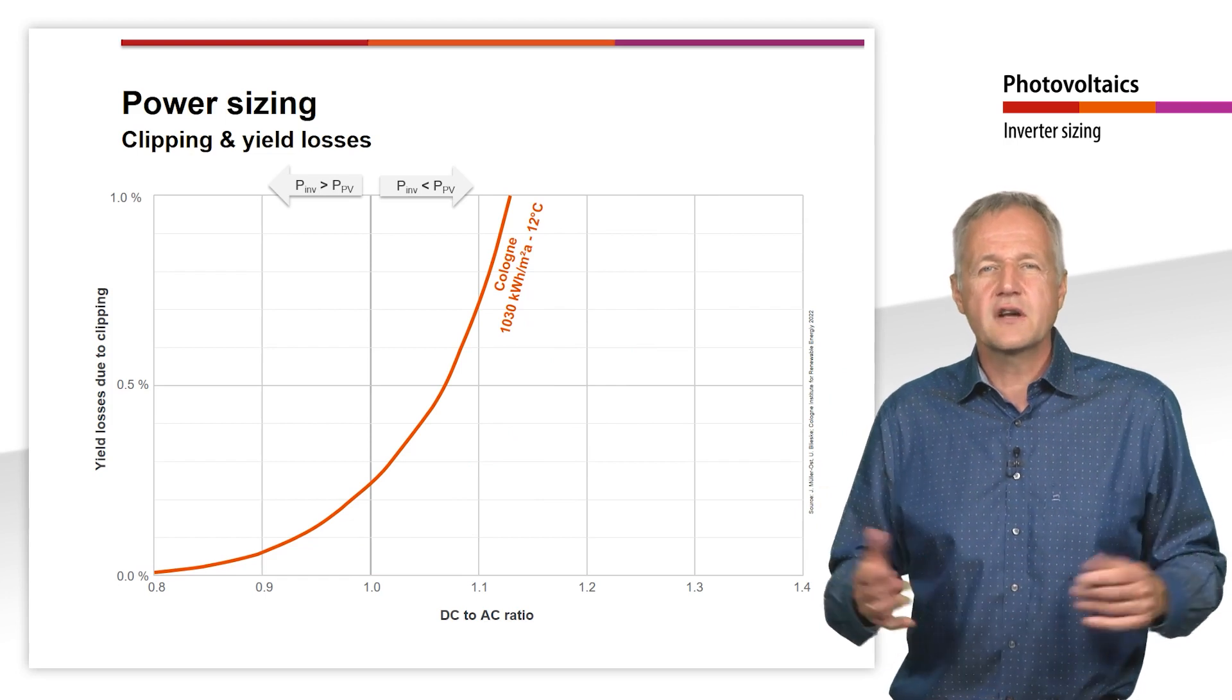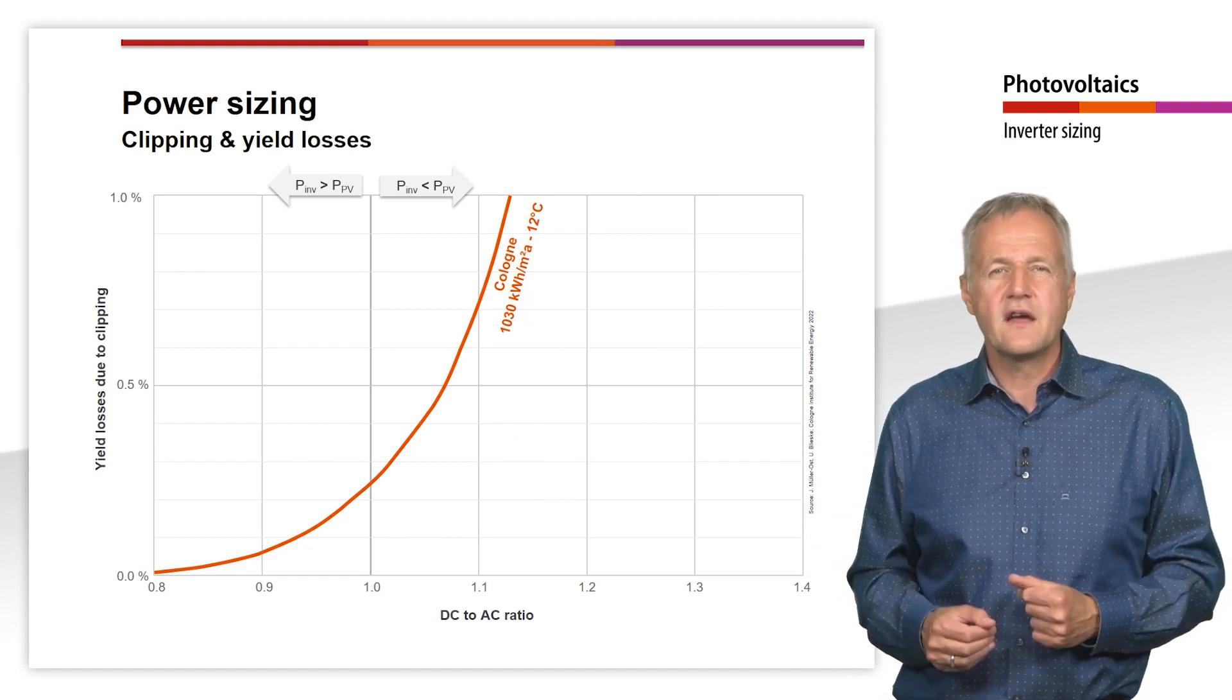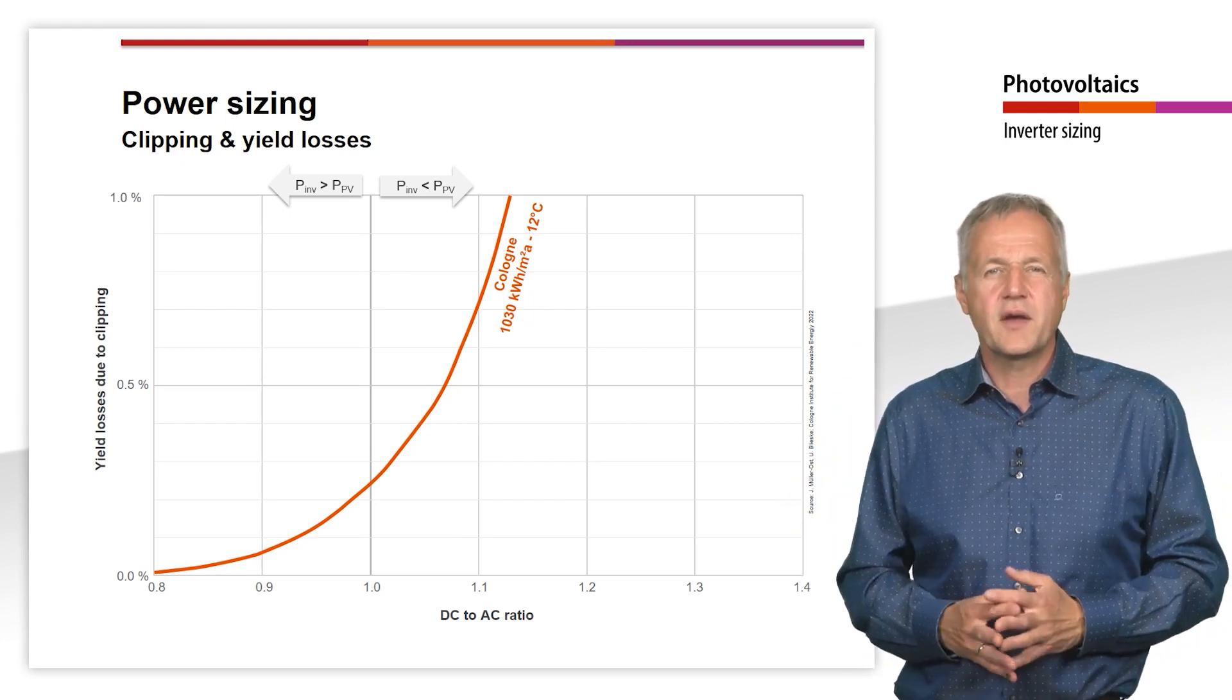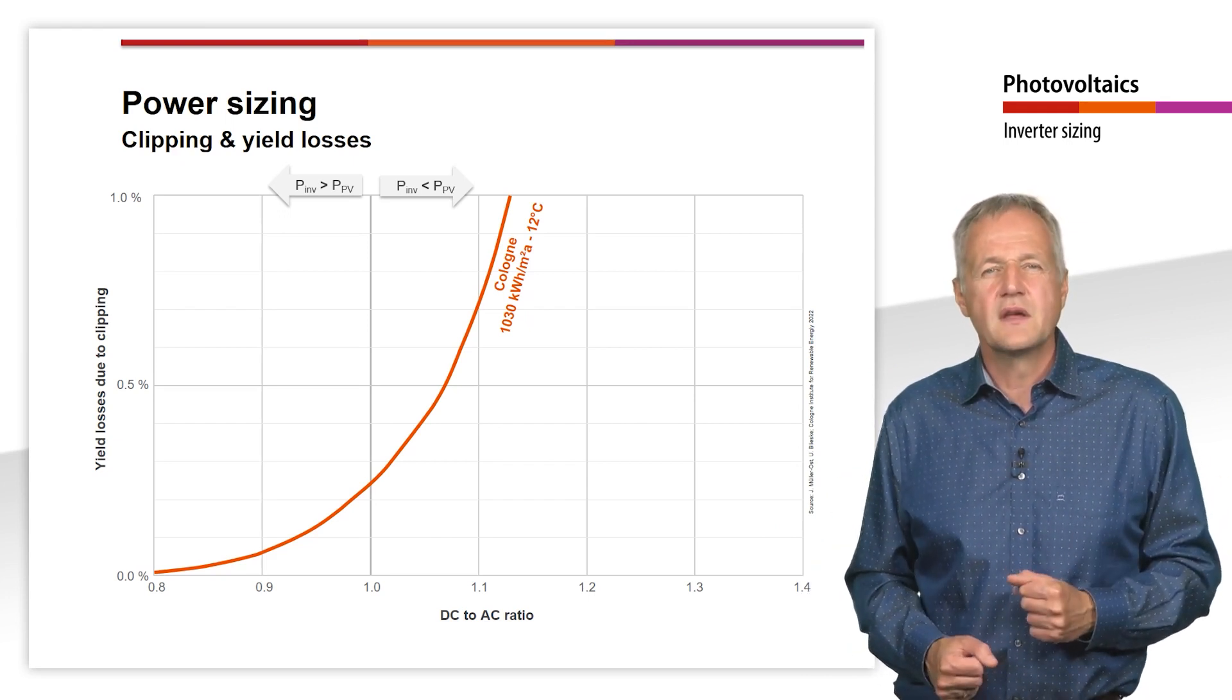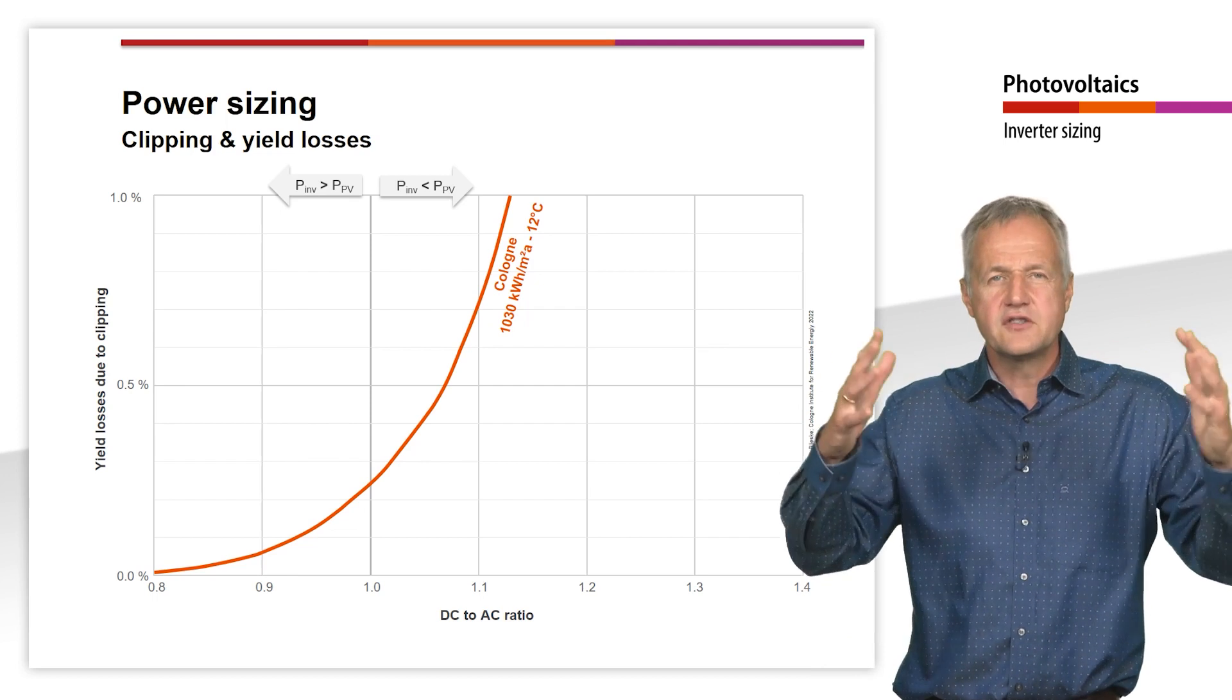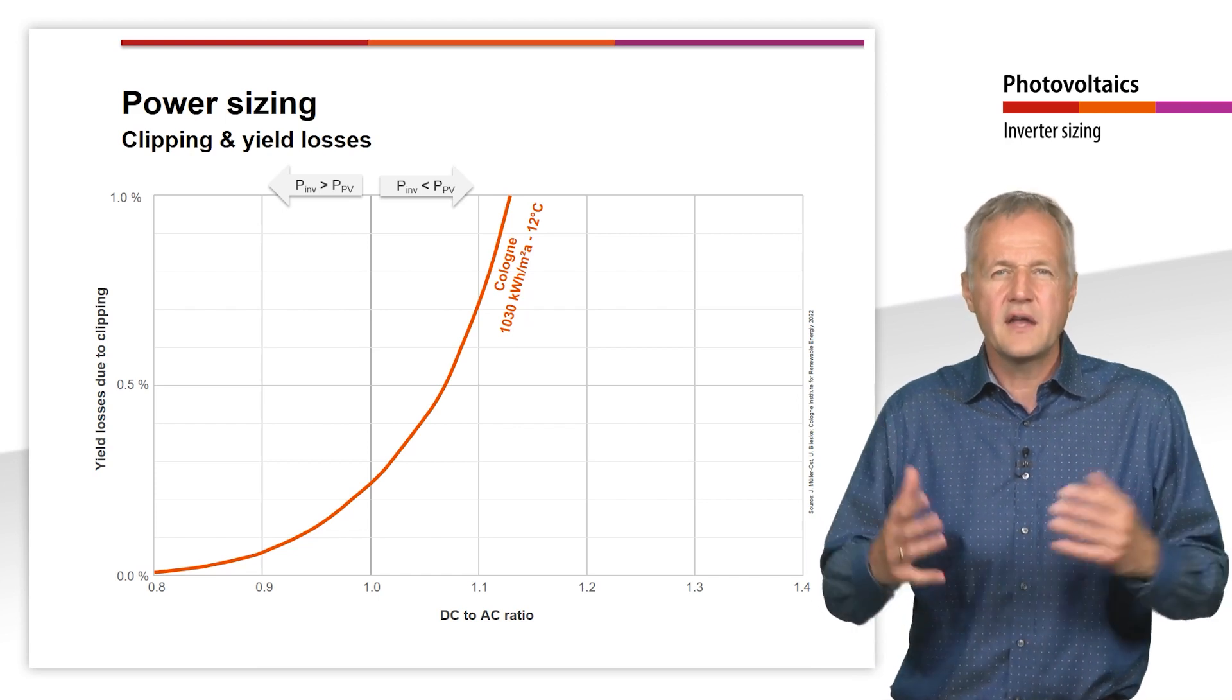In principle, an inverter can of course also be oversized. However, this only makes sense in very few cases, namely when a very high irradiance with simultaneously low temperatures can be expected for a significant time of the year. Examples of such a case are very irradiation-rich areas at high altitudes, since the modules heat up only slightly here due to the moderate temperatures despite high irradiance.